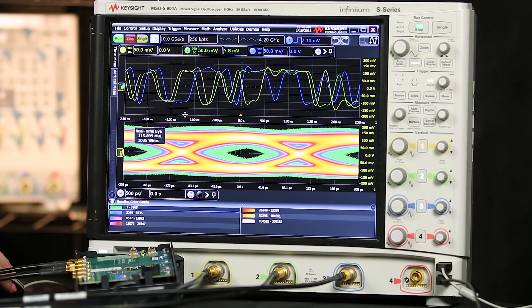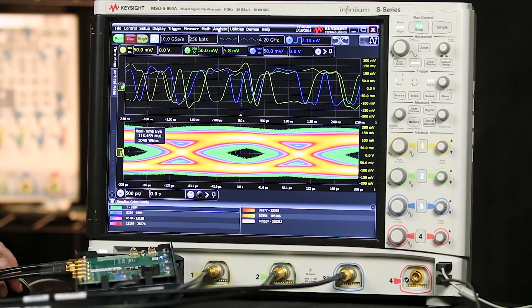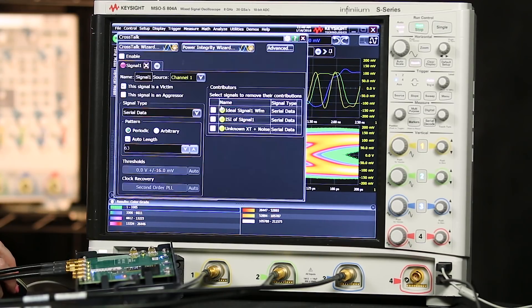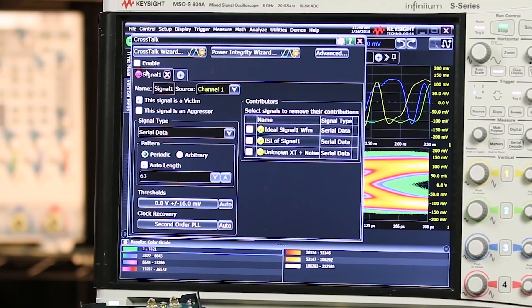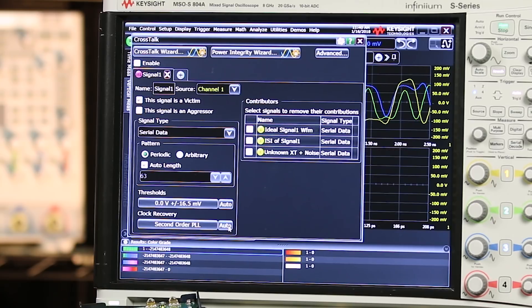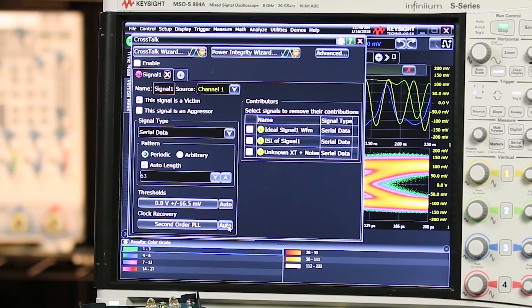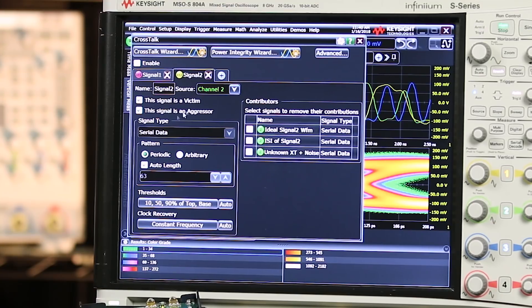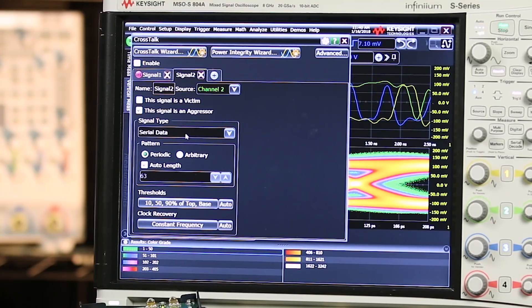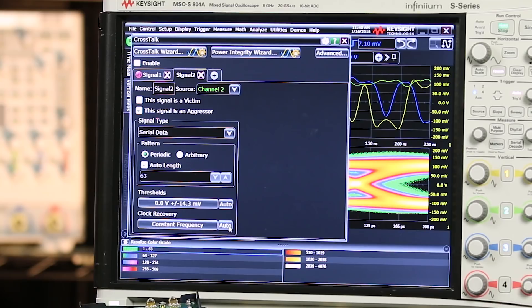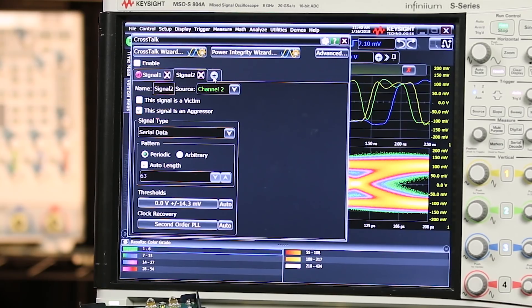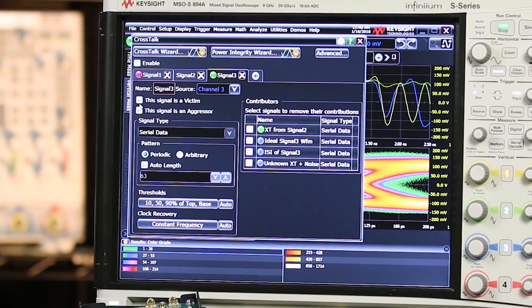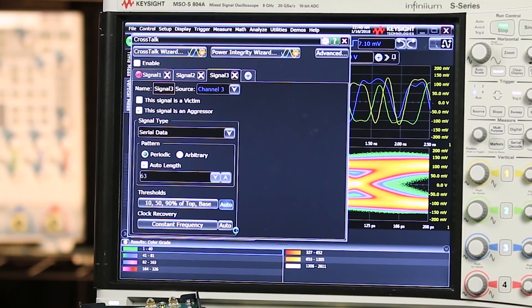To set up my crosstalk application, I'll go to the analyze menu and choose crosstalk. I want my channel one signal to be set up as the victim, and I'll have the scope automatically configure my thresholds and clock recovery. I'm going to set channel two as an aggressor signal. It's serial data, and again, I'm going to have the scope auto configure that. And channel three is also an aggressor, so I'll just go through the same steps.